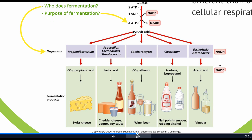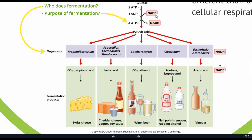Fermentation has two steps. The first step converts glucose into pyruvate — or pyruvic acid — generating ATP and NADH. The second series of steps is meant to regenerate NAD+ so that it will be present back in glycolysis again. What's interesting to humans is the byproducts of this second step, which creates different organic molecules.